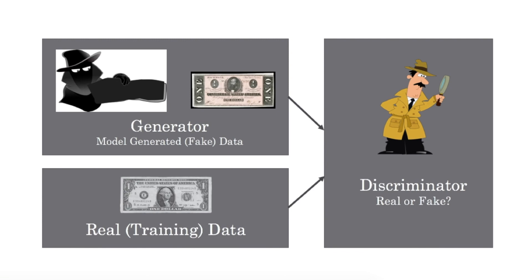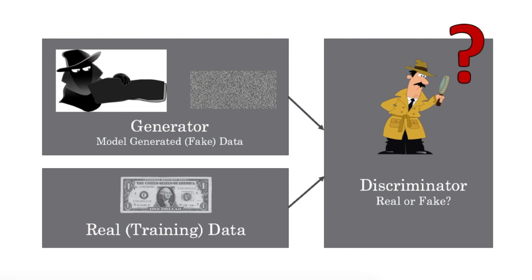In the beginning, the generator doesn't know anything about making $1 bills, so it just outputs random noise. However, the discriminator also doesn't know anything about $1 bills, so it makes random decisions. But through time, one will do better than the other, and that will lead to us updating the other one to improve. When training has converged, the discriminator can no longer tell the difference between real and fake data, because the generator is creating samples that look identical to real data. This competition in a zero-sum game between two models is what is meant by adversarial.